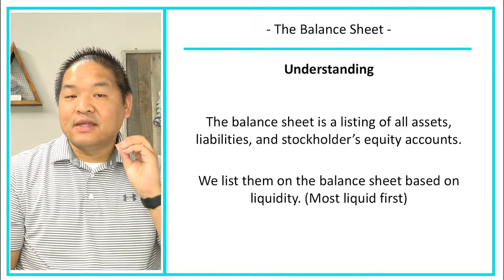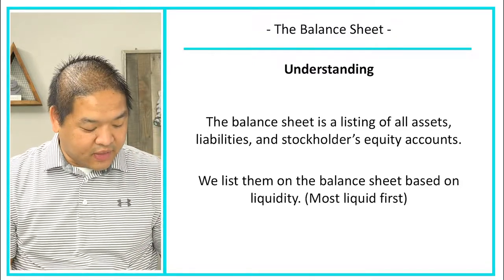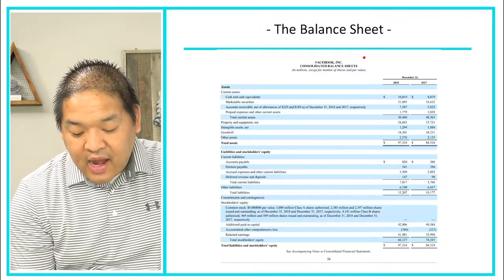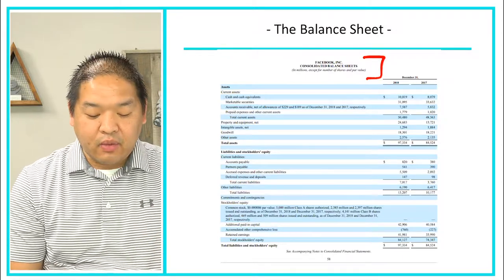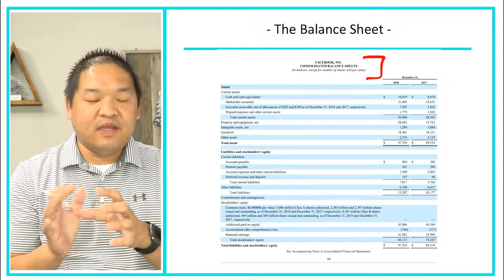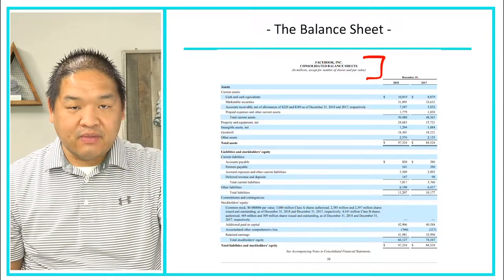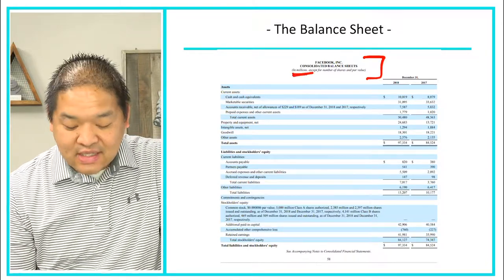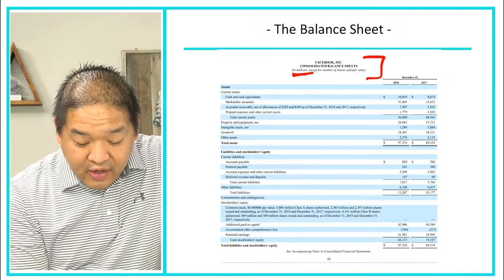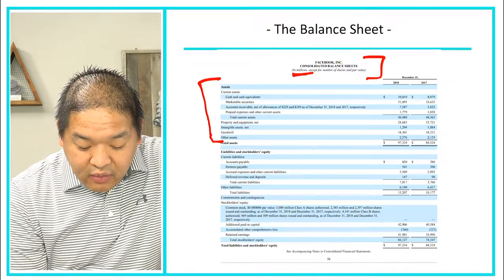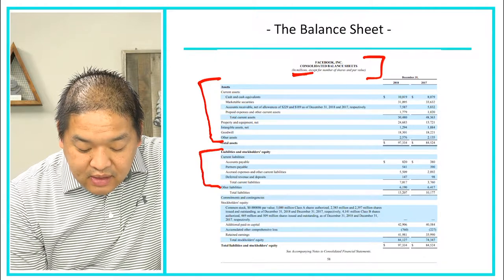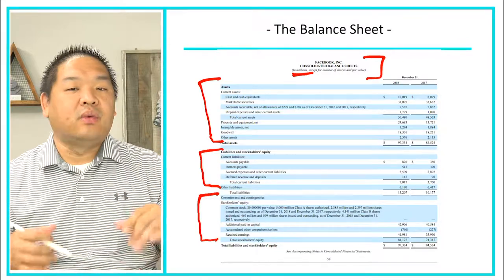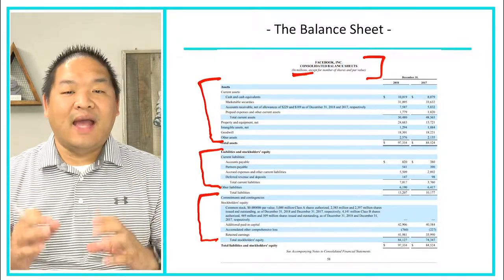Here's an example of Facebook's balance sheet. You'll see the header with the who and the what. Everything is in millions. We've got assets listed first, then liabilities, and then equity. We list all assets first, then all liabilities, and then stockholders' equity.